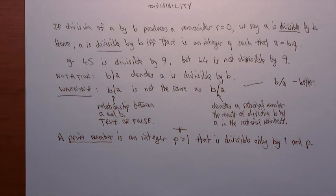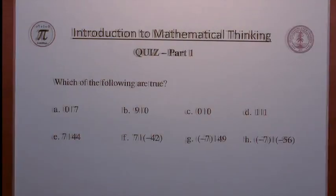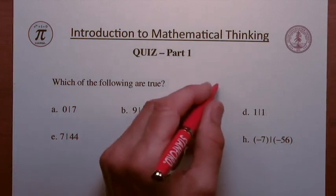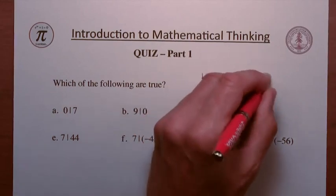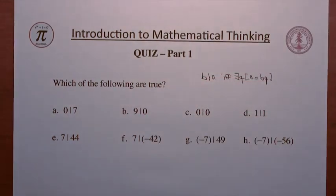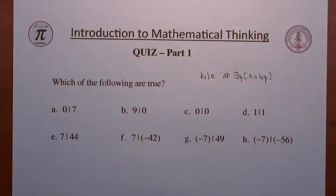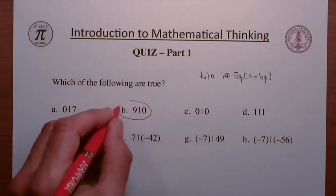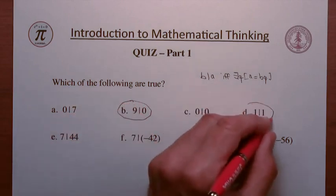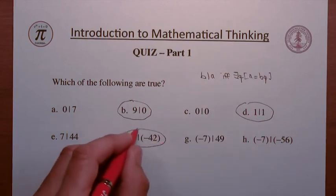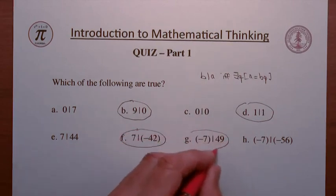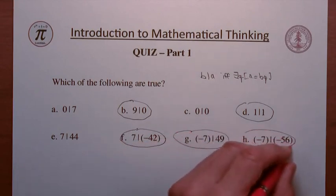Okay, how did you do? Well, remember the condition we have to check is this one. B divides A if and only if there is a Q such that A equals BQ. Well, let's see what we have. The correct ones are B, D, F, G, and H.